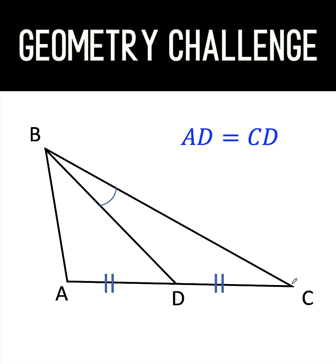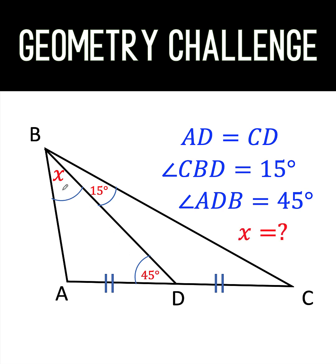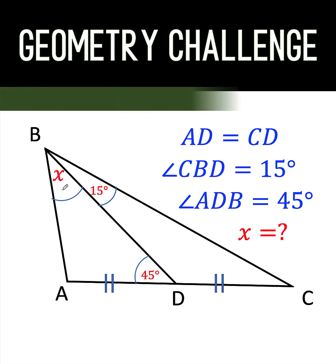The measure of angle DBC is equal to 15 degrees and the measure of angle ADB is given to be 45 degrees. We would like to find what is the measure of angle ABD denoted as x. You can pause the video and see if you can solve this interesting geometry problem.